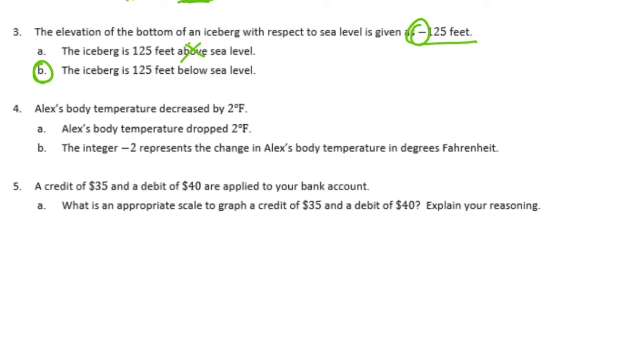Number 4, Alex's body temperature decreased by 2 degrees Fahrenheit. Alex's body temperature dropped 2 degrees Fahrenheit. That would be correct. The integer negative 2 represents the change in Alex's body temperature in degrees Fahrenheit. That is the integer that represents his change in body temperature.